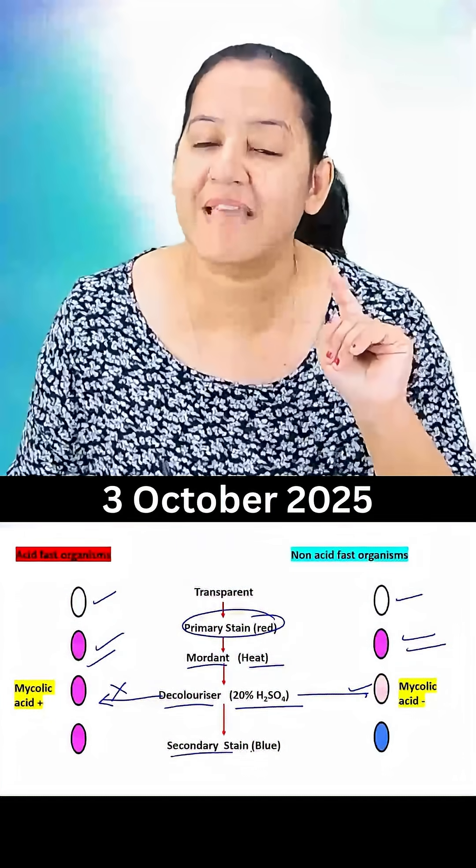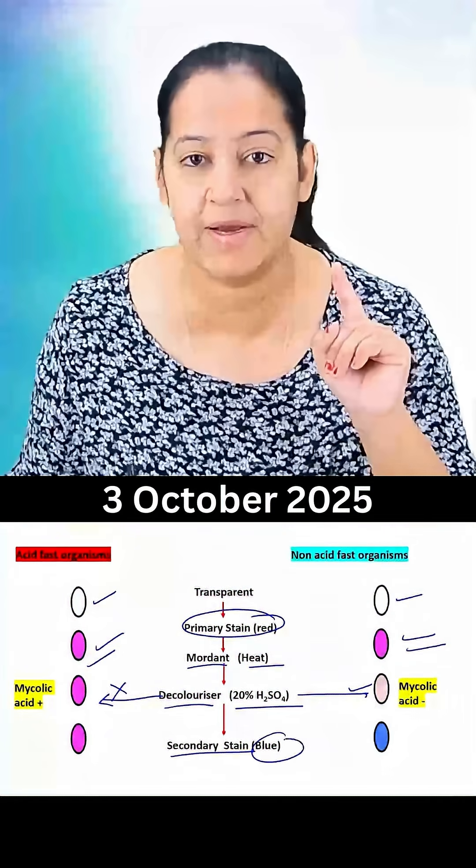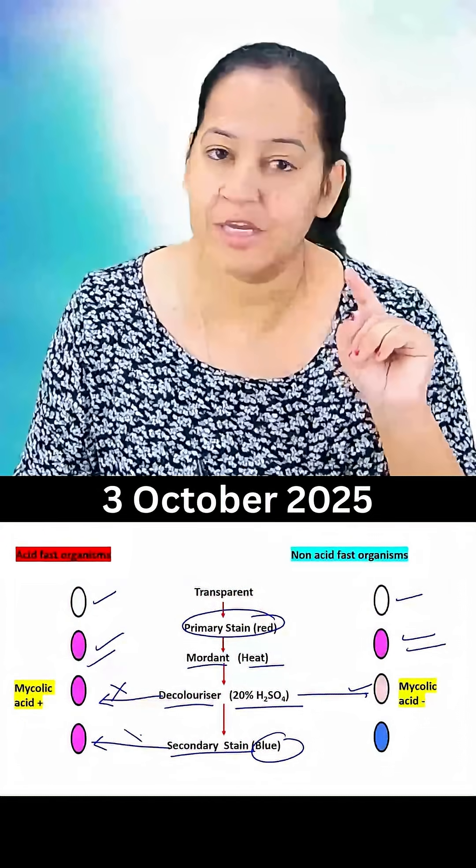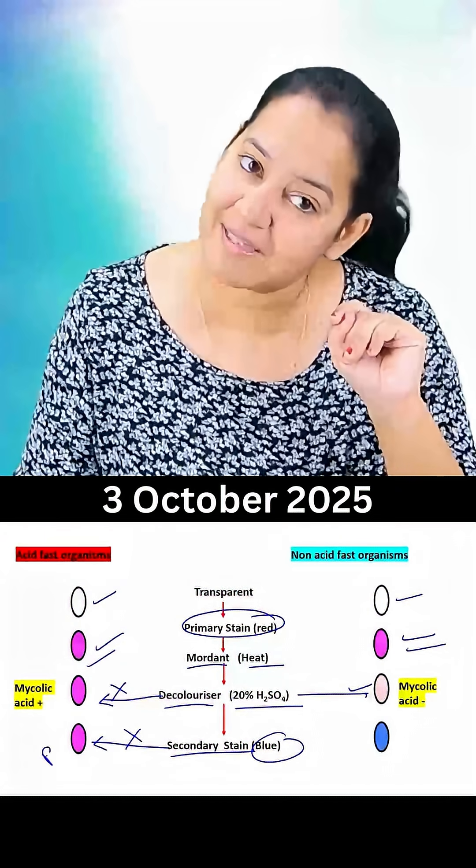Now the last step we use a secondary stain or counter stain which is blue in color. The bacteria which are resistant to the decolorizer don't have space, so they don't accept the secondary stain, they are still red in color.